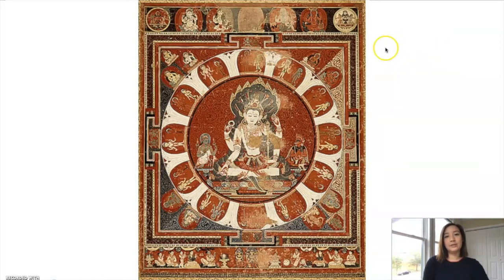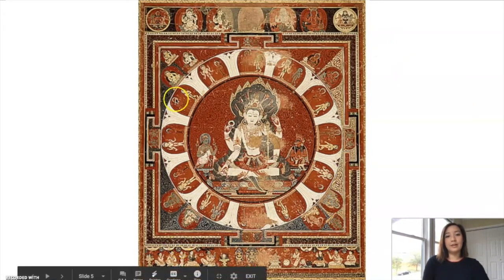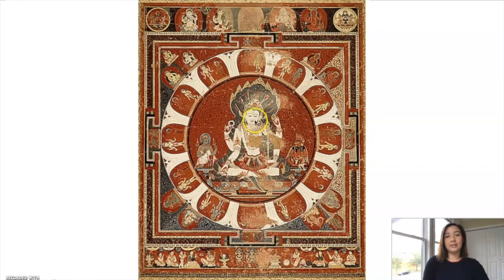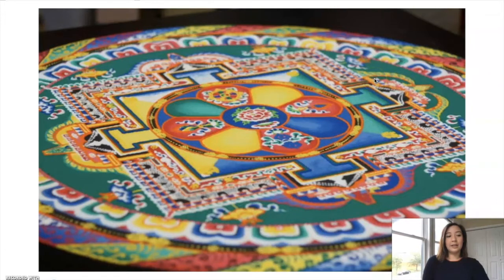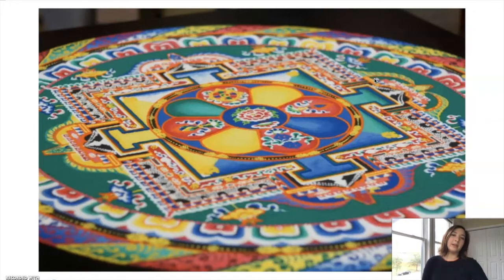In Hinduism, mandalas usually have this square shape with the four gates and then a circle on the inside. And finally, this is a sand mandala that Tibetan Buddhist monks created with colored sand. They use a metal straw that they lightly tap so the sand comes out and they can control where it goes.